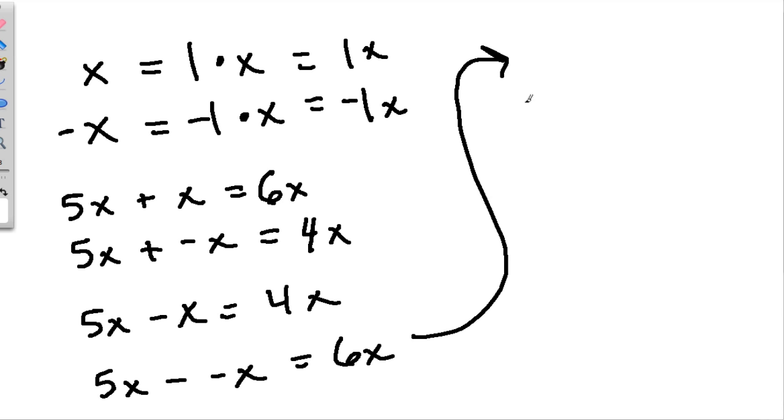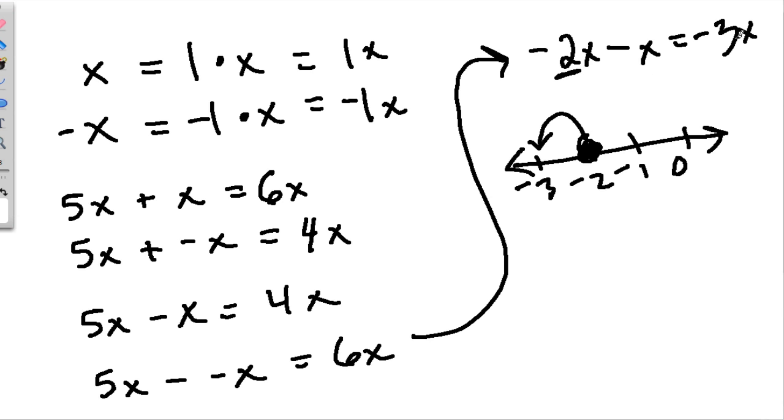Other examples could be negative 2x minus x. Well, here we have negative 2. Remember on the number line, if we're standing at negative 2, right here, we take 1x away. Remember that 1 is not written. We hop down 1 to negative 3. So this would be negative 3x.